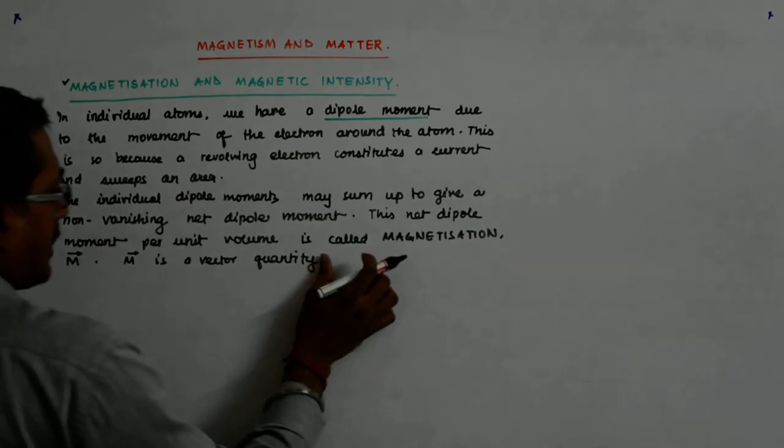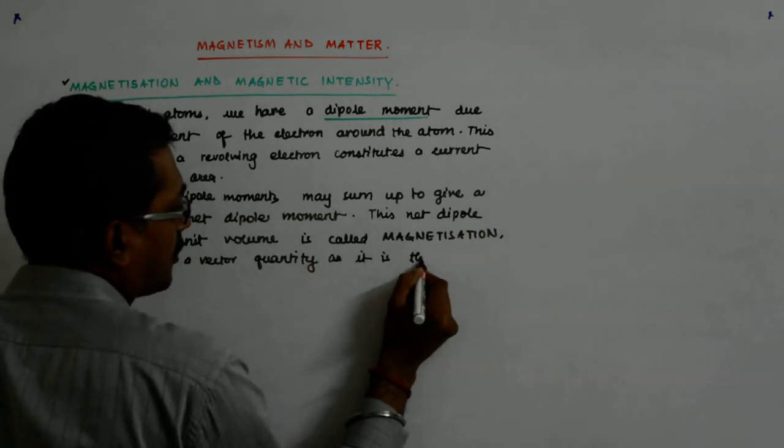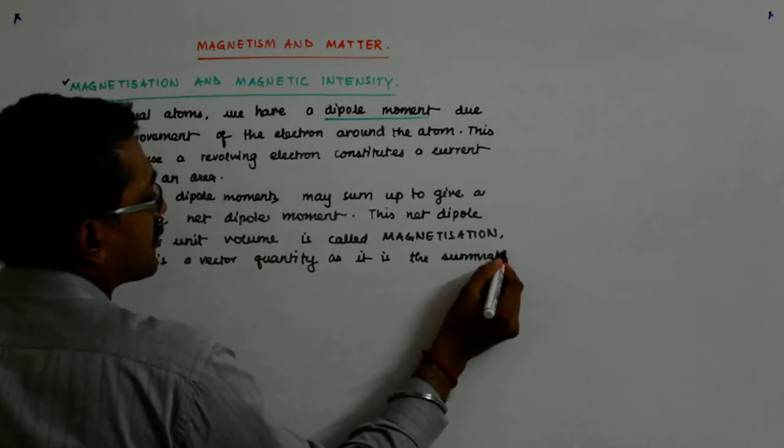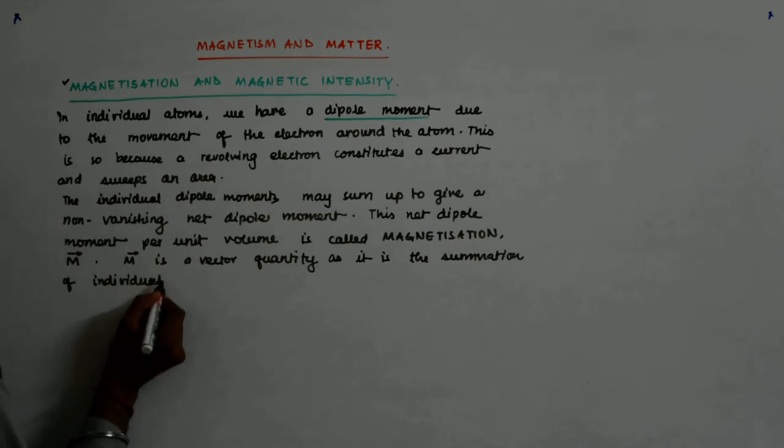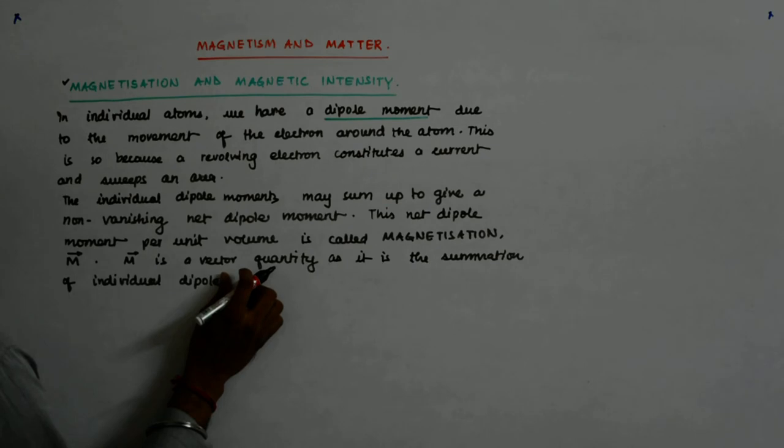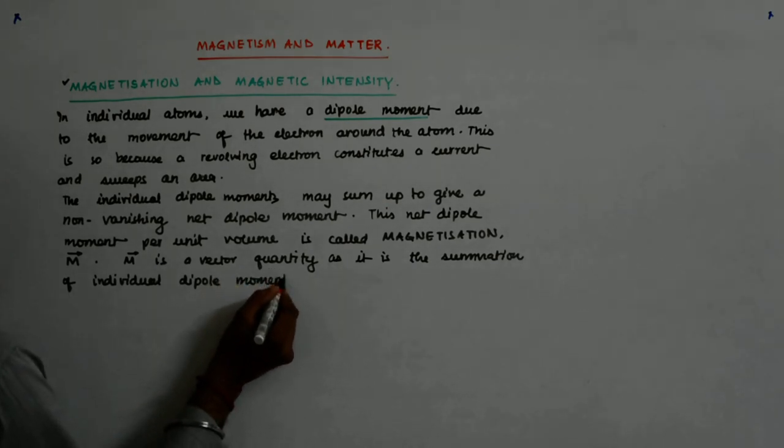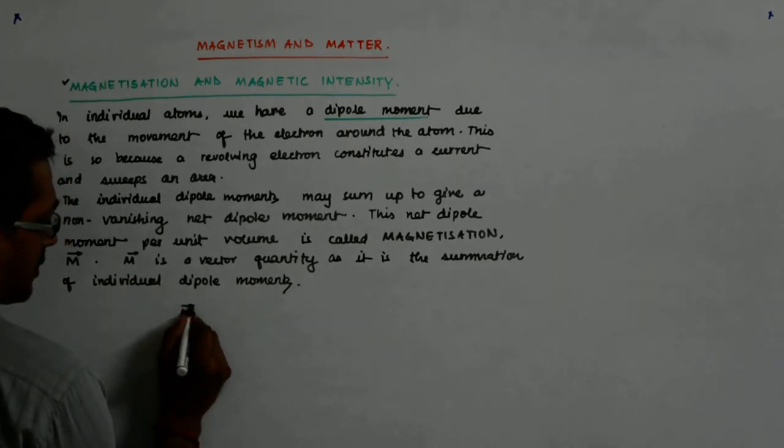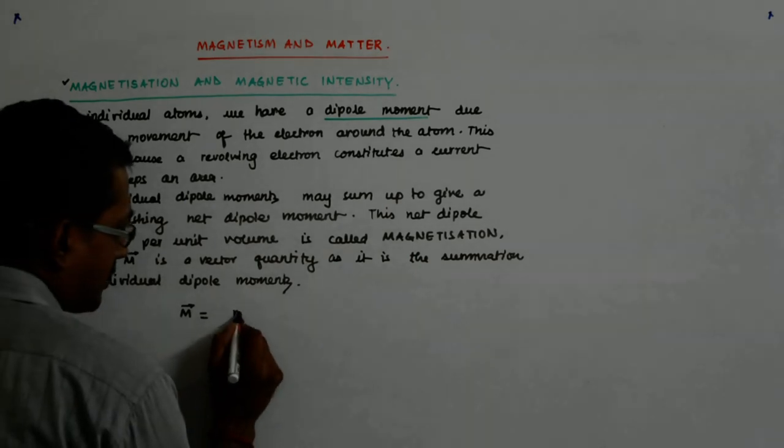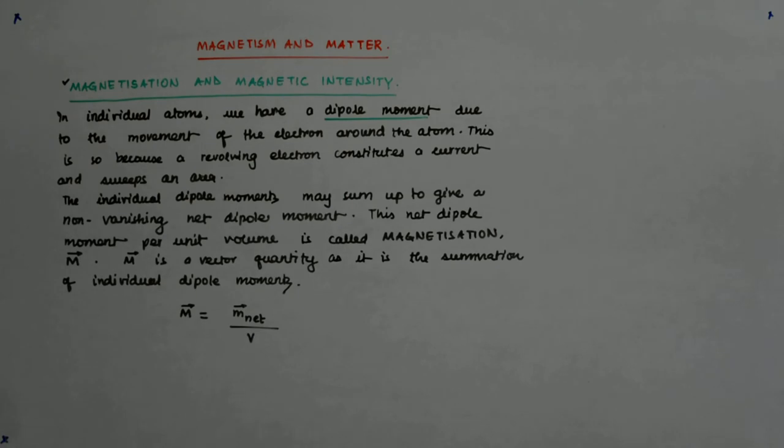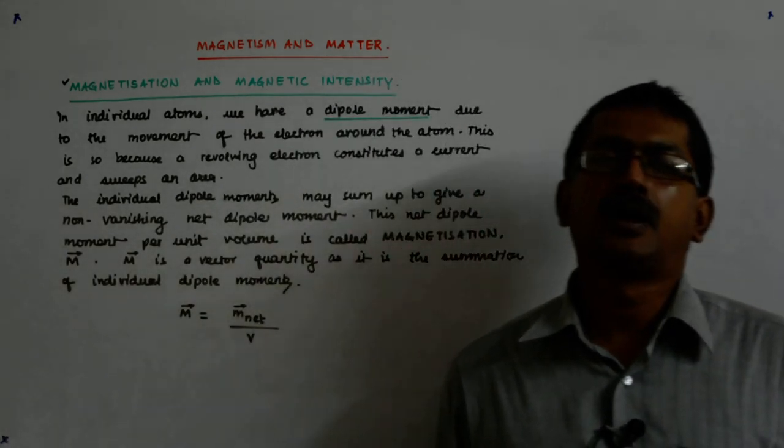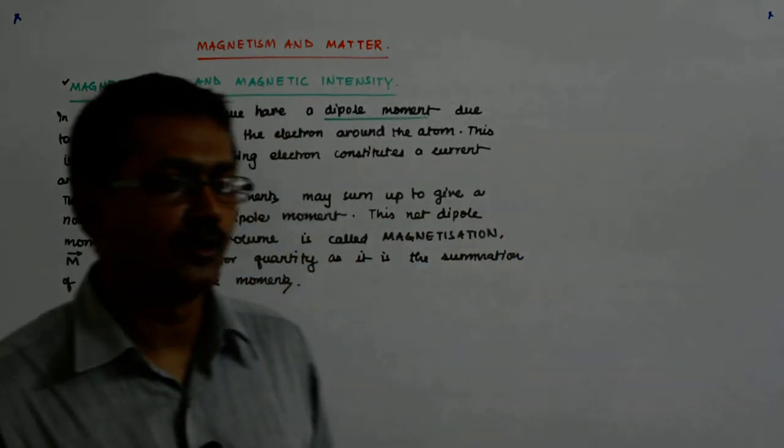As it is the summation of individual dipole moments, M is the net dipole moment per unit volume. So M magnetization is the sum total of all the dipole moments divided by volume. It is the net dipole moment per unit volume.